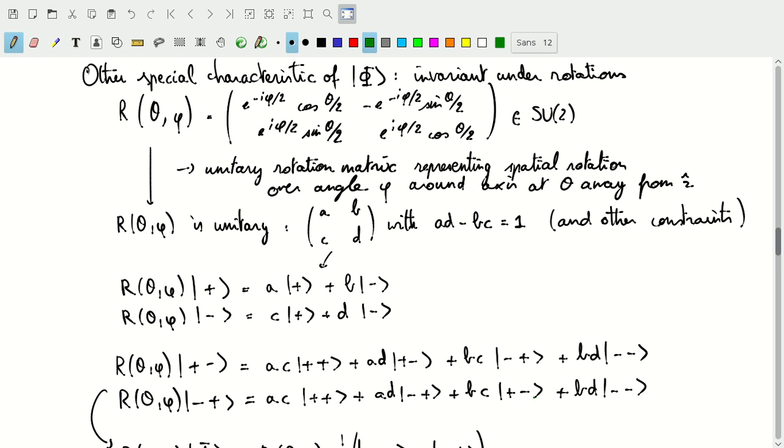Okay. So let's step back. What are we doing here? This is how this |+-> state, now in a four-dimensional space, how that state rotates or is modified under rotation over an angle φ around an axis that is at an angle of θ.